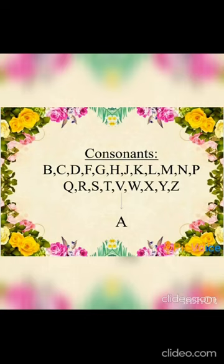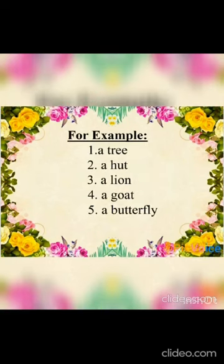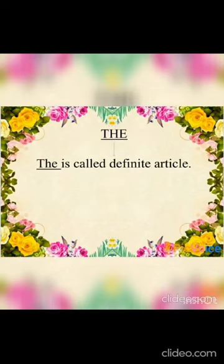Now we will see some examples. For example: a tree, a hut, a lion, a goat, a butterfly. Here we can see all these words are starting with a consonant, so we have used the article 'a' to identify each word.